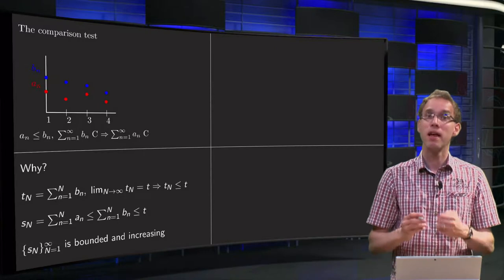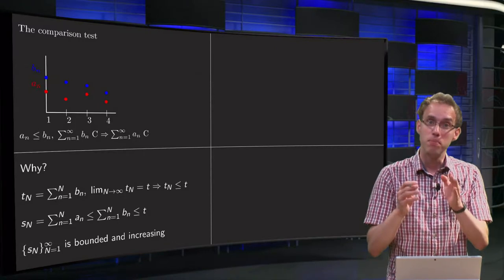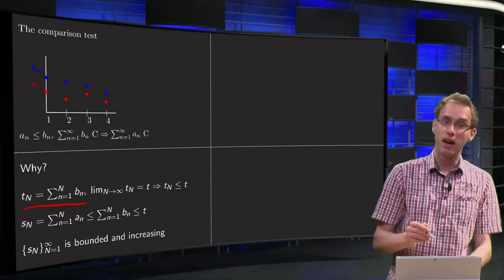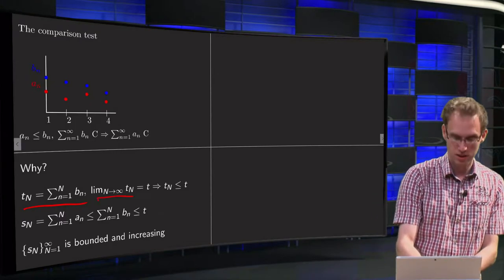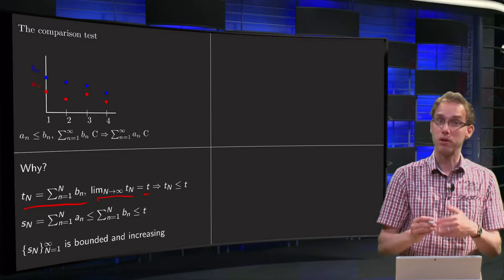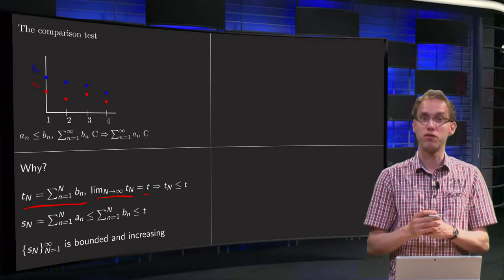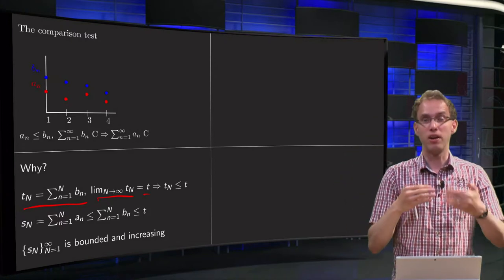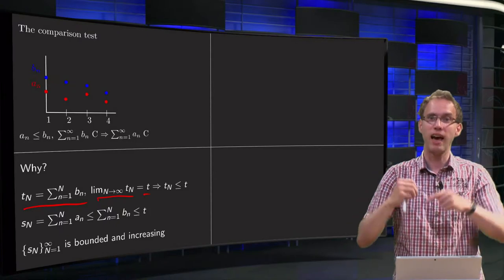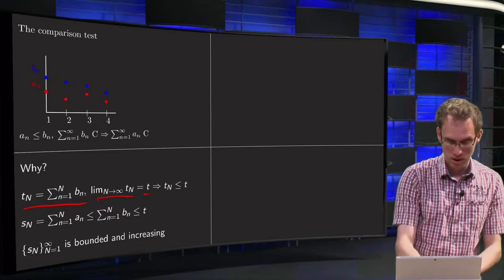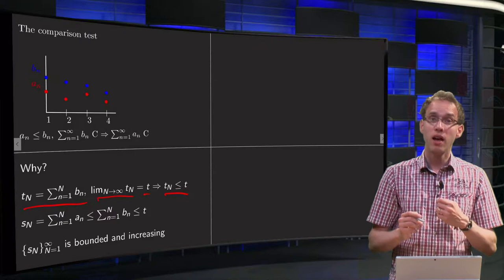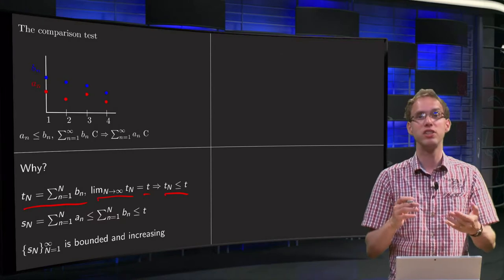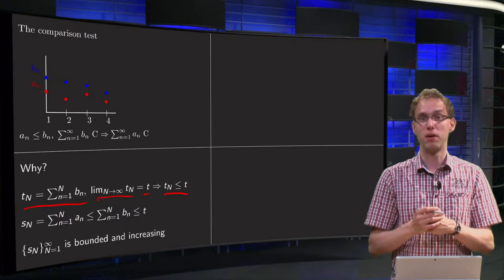So why is that? We know a lot about the series with the Bn terms. For example, if we define the partial sums T capital N as the sum of the first n terms of the Bn, then we know that the limit as capital N goes to infinity of Tn exists because the sum converges. And we are only dealing with series with positive terms here, so we know that this limit T is above all the Tn, because the Tn are the partial sums. You compute the limit, you are always adding more terms to this Tn, so the Tn are below T. So that's all something we know about the series with the Bn: it converges to some T and all the partial sums are below T.